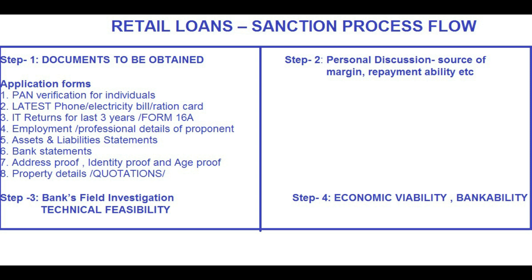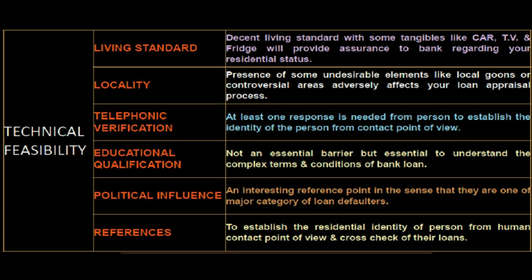Step 3 is bank field inspection for technical feasibility. Step 4 covers economic viability and bankability. In technical feasibility, the bank evaluates living standards, locality, telephonic verification, educational qualification, political influence, and references. Decent living standards with tangible assets like a car, TV, and fridge provide assurance about residential status. Presence of undesirable elements in a locality adversely affects the appraisal. At least one telephonic response is needed to establish identity.